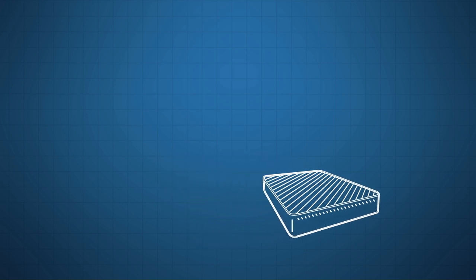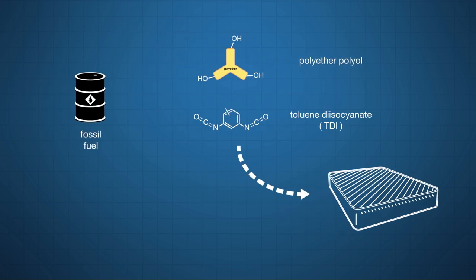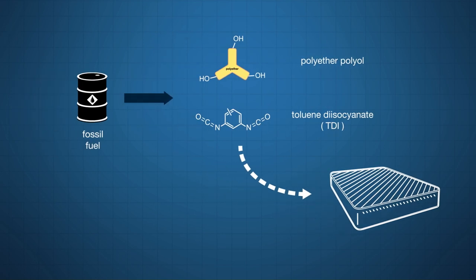Flexible polyurethane foams are generally synthesised with isocyanates and polyether polyols, mainly derived from fossil fuels, which is a non-renewable resource.